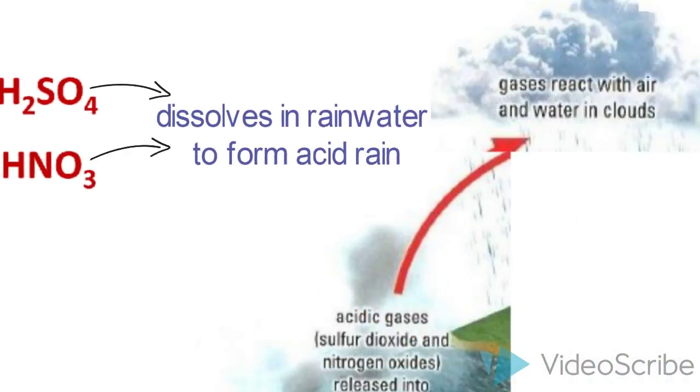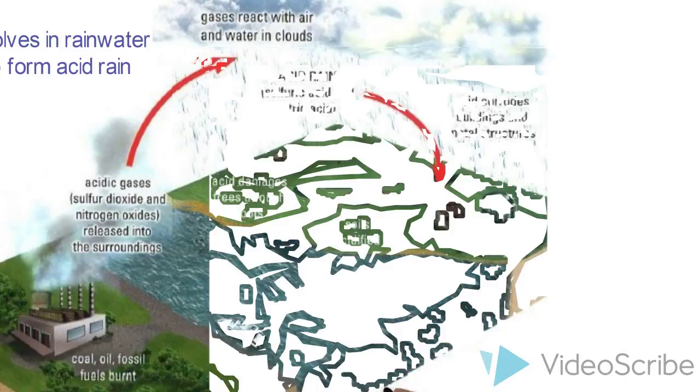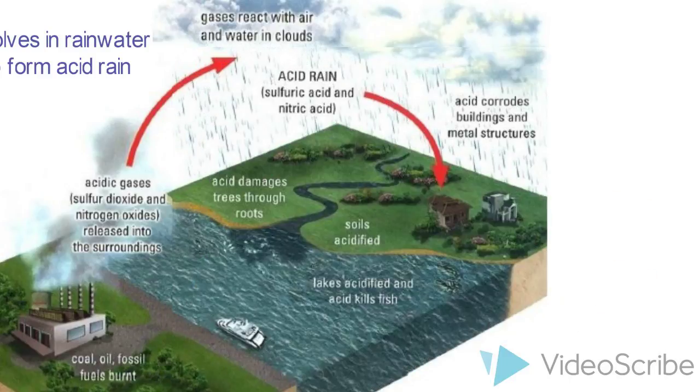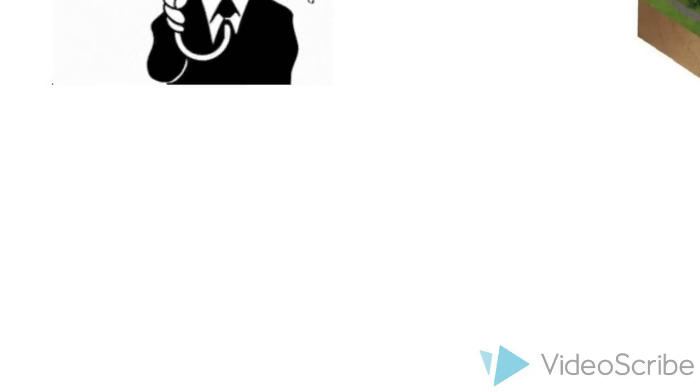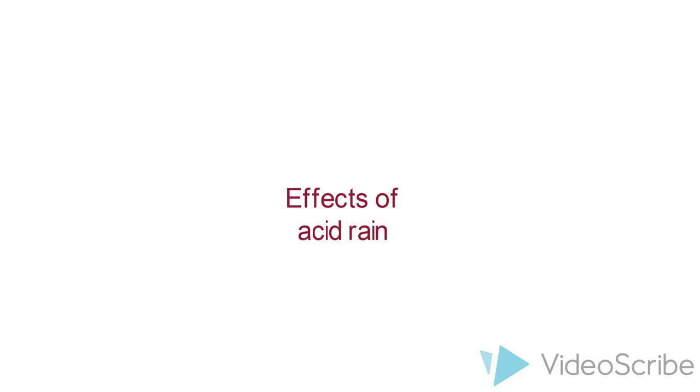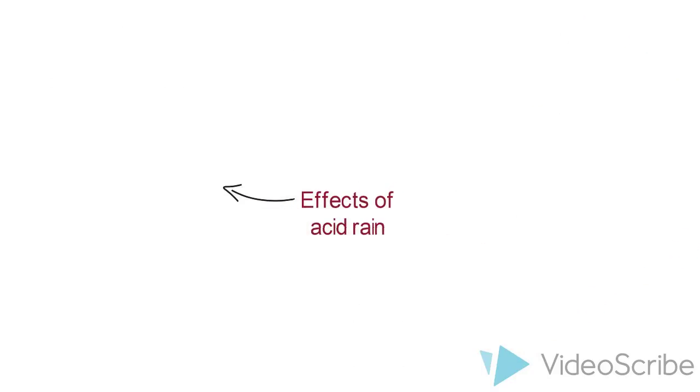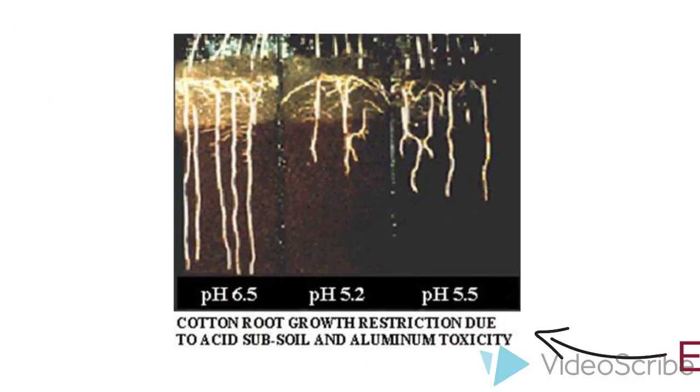So, when acid rain falls, it can actually result in many harmful effects both for the living as well as the non-living things. Let us take a look at what are some of the effects of acid rains. Firstly, acid rain can destroy plants by making the soil too acidic. As you can see over here, the root growth is dependent on the acidity of the soil itself.